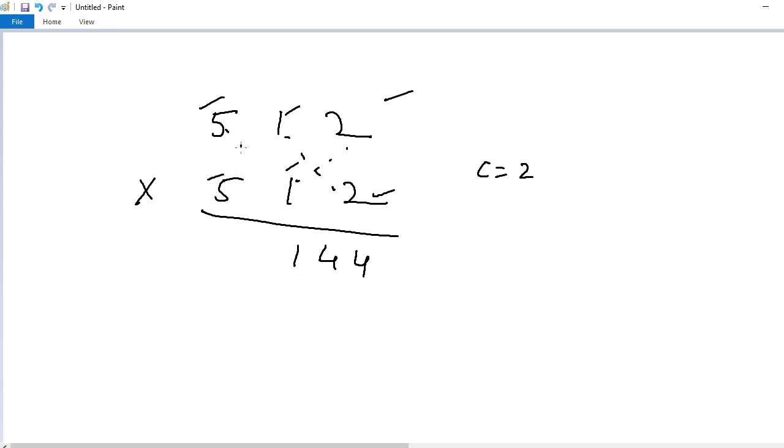Fourth step, 5 into 1, 5 plus 1 into 5, 5. 5 plus 5, 10, carry 2. So 10 plus 2, 12. Carry 1. Fifth step, 5 into 5, 25 plus carry 1, 26.